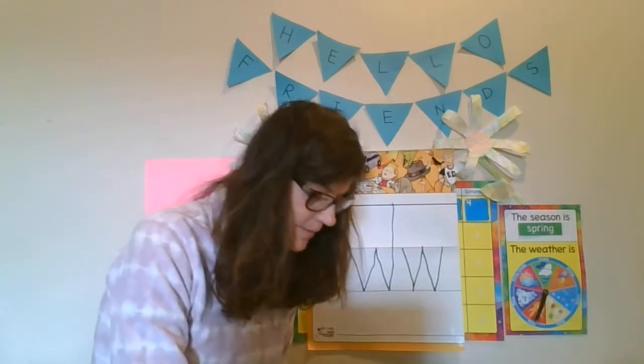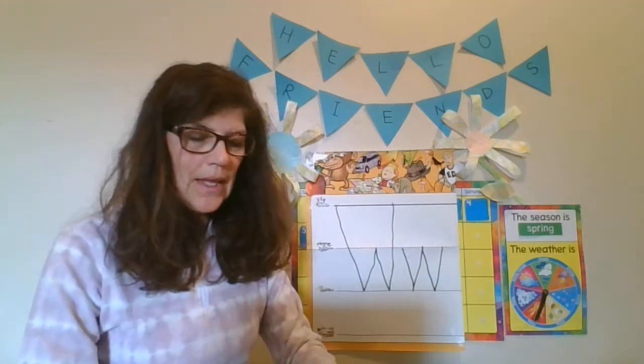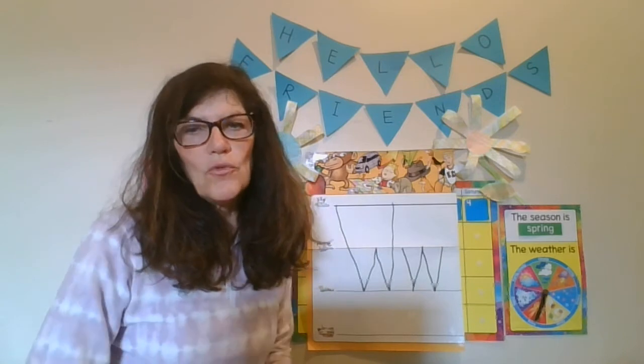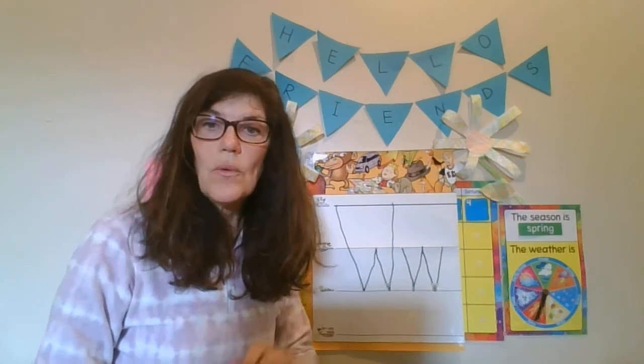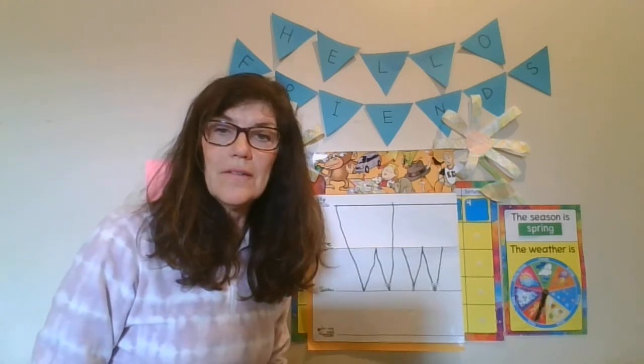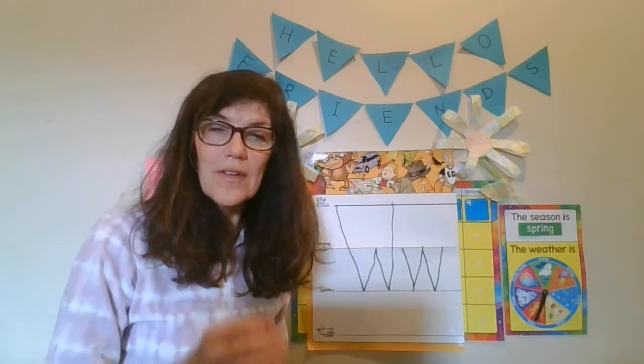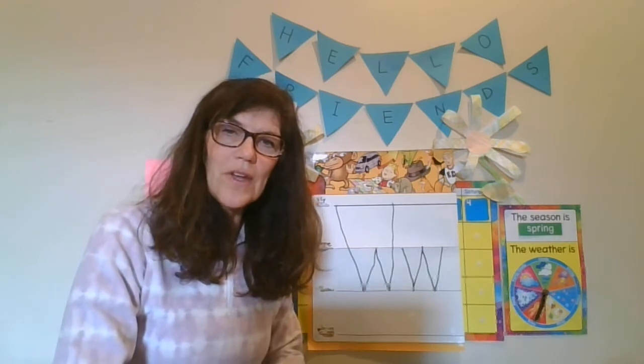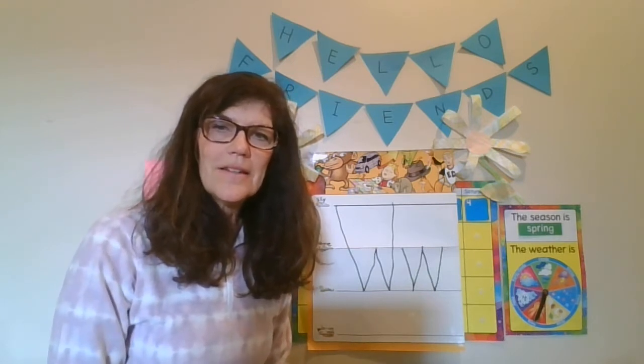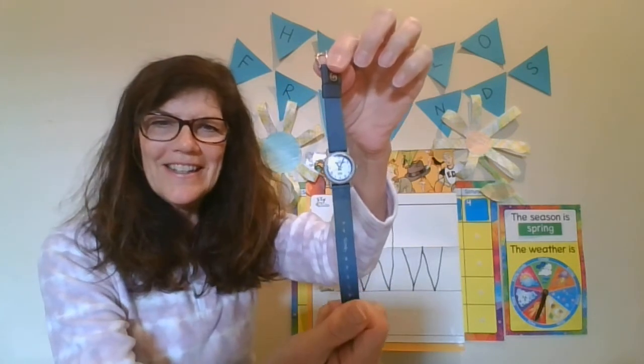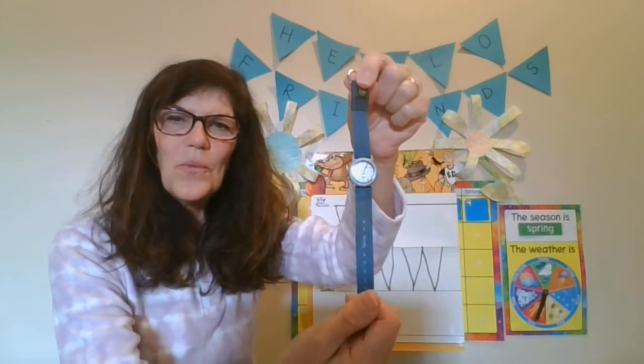This is something that you wear on your wrist, and it tells you what time it is — so it has a clock face on it. It's a tiny clock that you wear on your wrist. Does anybody know what that is? It's a watch! You can wear it on your wrist and look at it to see what time it is.